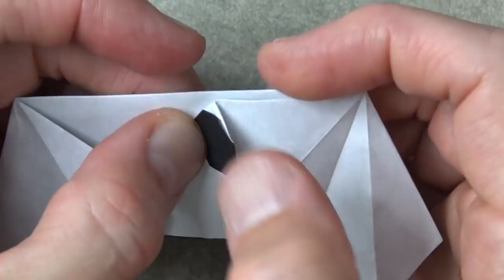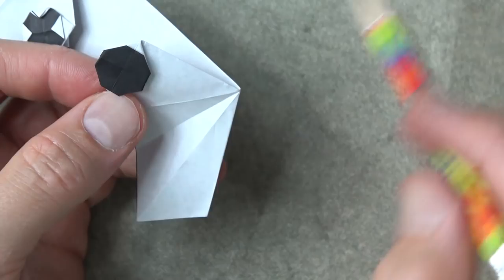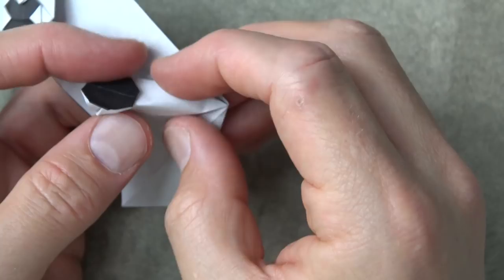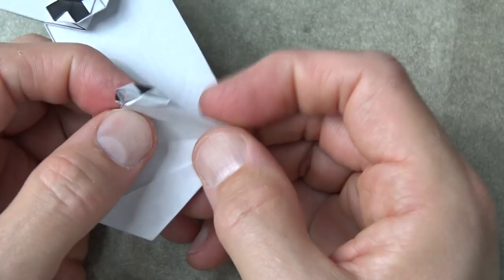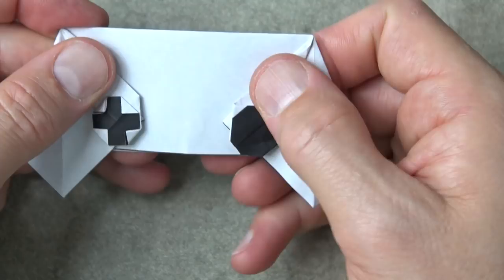Okay, now same sort of thing. We're going to fold between this point and this point. Like that. And now fold, you can fold on this crease. Like that, and there's the joystick.